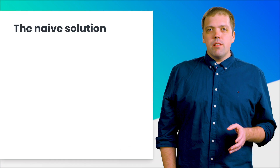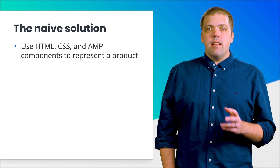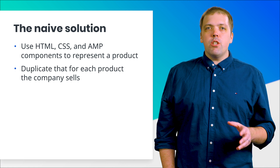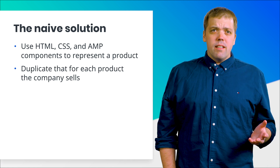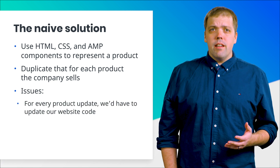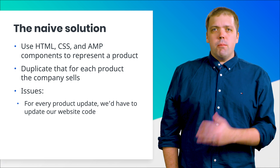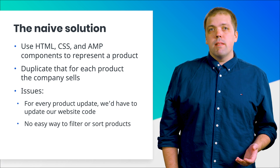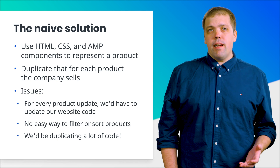Based on what we've learned so far in these courses, we might just want to use HTML, CSS, and AMP components to represent a product, and then duplicate that code for each product the company sells. While this approach would work, there are some significant drawbacks. First, product information changes, and every time that happened, we'd need to update our HTML and republish it to the web. There's also no easy way to filter or sort products. And last but not least, we'd be duplicating a lot of code, which is never a good practice.